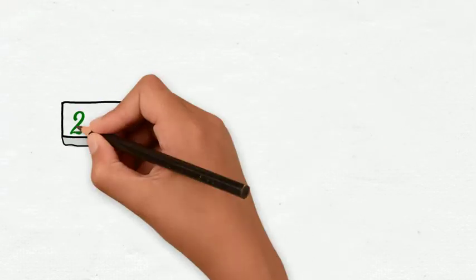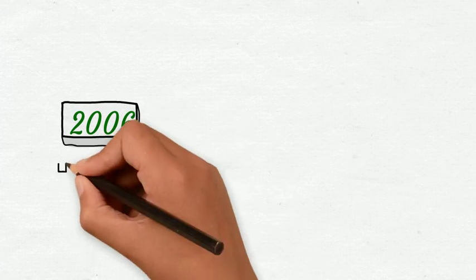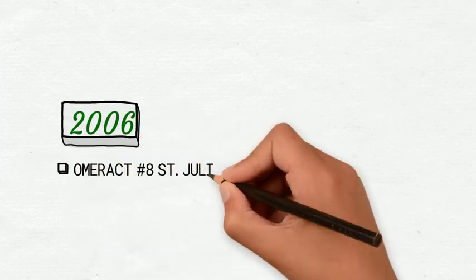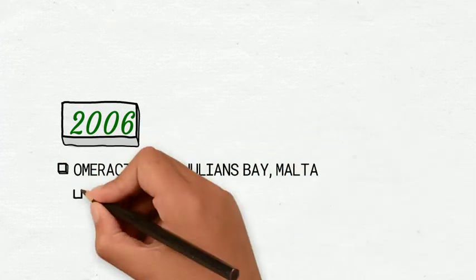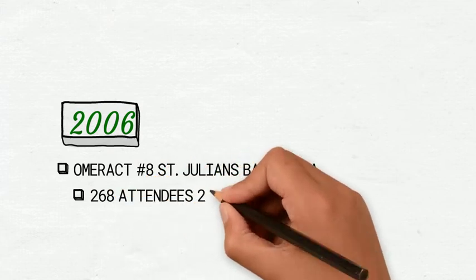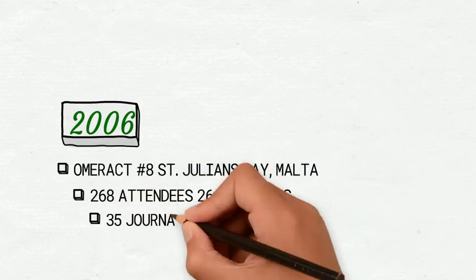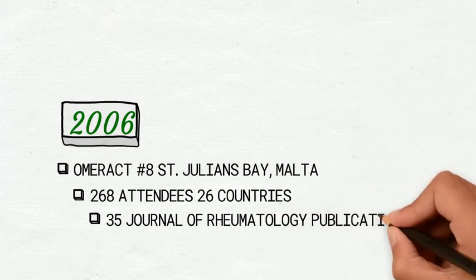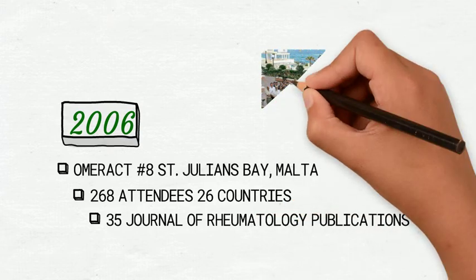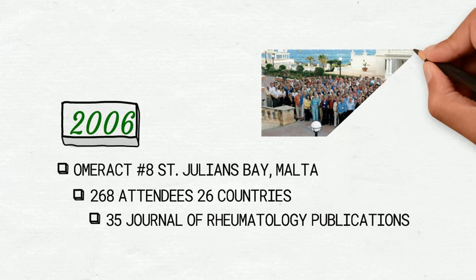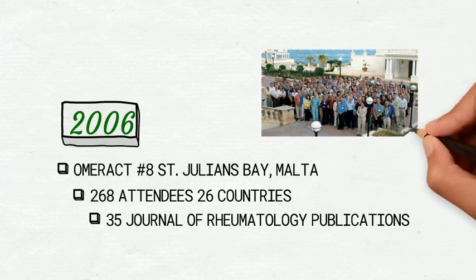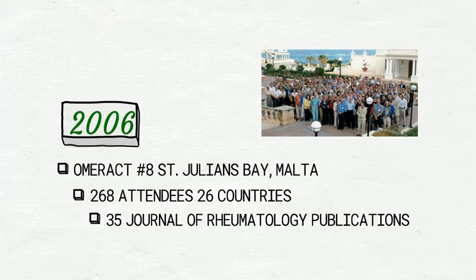OMERACT VIII, held in St. Julian's Bay, Malta in 2006, included the participation of several special interest groups in a super workshop providing input from their specialized areas into the generic concept of surrogate endpoints. The meeting agenda included imaging and outcome measures for psoriatic arthritis and fatigue and rheumatoid arthritis, as well as workshops on vasculitis, fibromyalgia, and drug safety.